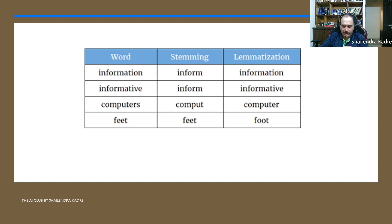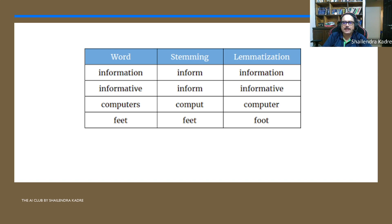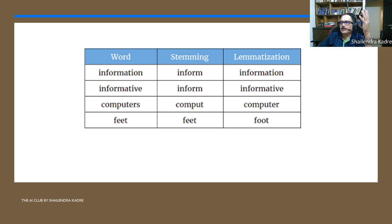So lemmatization is more towards preserving the meaning and taking the base word accordingly — that is the more precise definition of lemmatization. Stemming is simply removing the suffix and taking whatever remains. There are two main Python libraries used: spaCy, which is a modern library that does only lemmatization and does not provide any stemming facility, and NLTK, which is an older library providing both stemming and lemmatization.